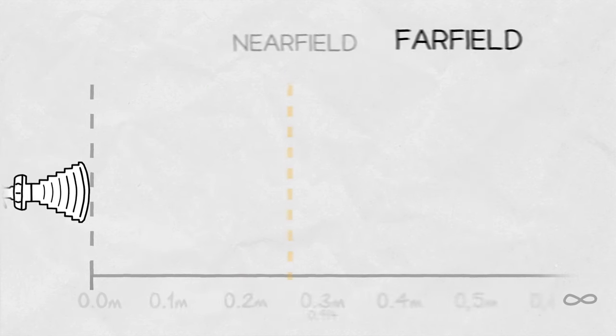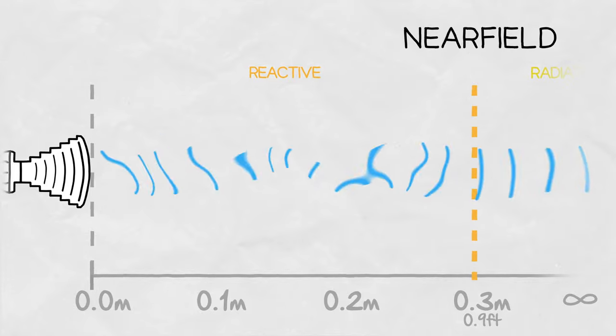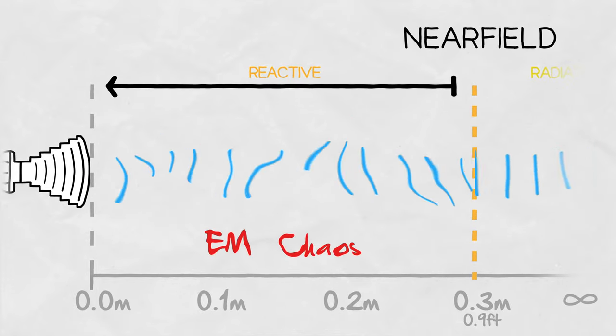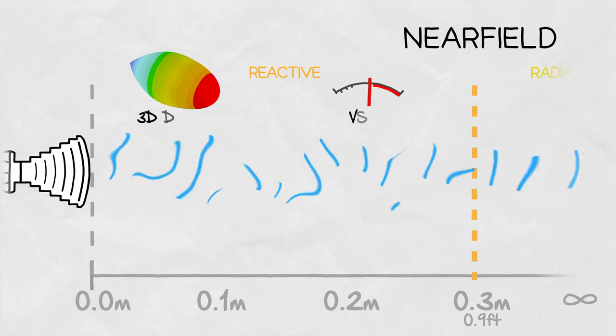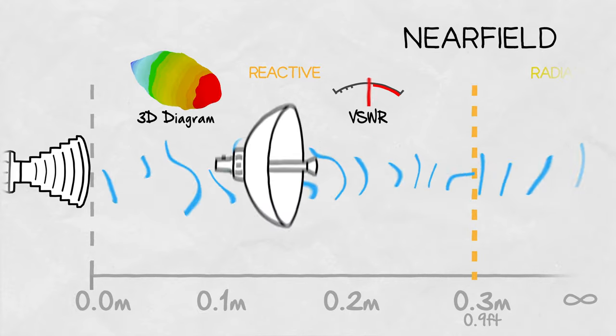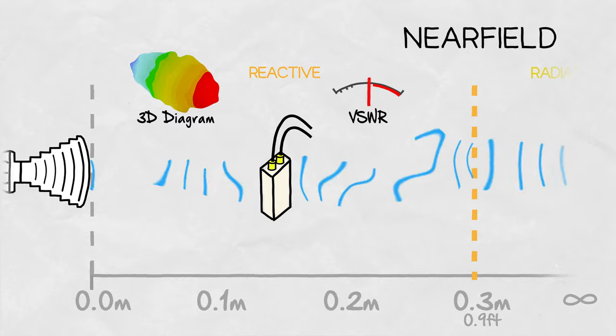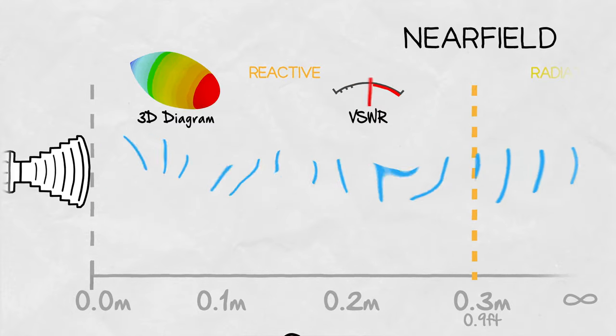On the other side, closest to the antenna, we have the reactive near field region. This is a place of electromagnetic chaos. Any objects inside this region cause unpredictable changes to the antenna's radiation diagrams and VSWR, because it becomes a part of the antenna itself.